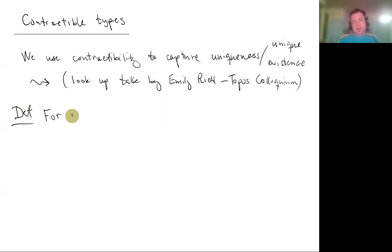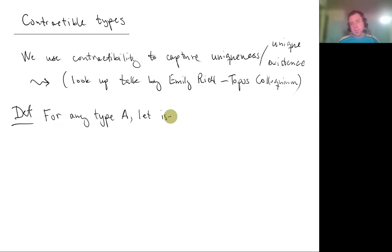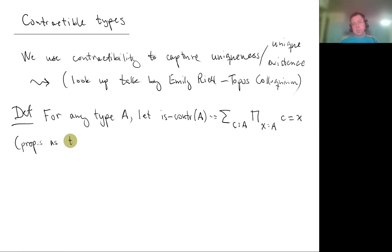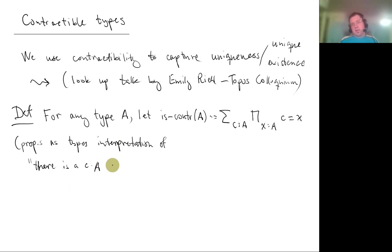Here's the definition. For any type A, we define a new type 'is-contractible A', which is the sigma type of a center point c in A such that for every x in A, c equals x (using the identity type). This is the propositions-as-types interpretation of: there exists a c in A such that every x in A equals c.